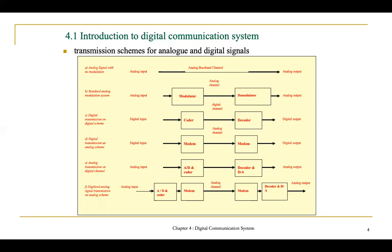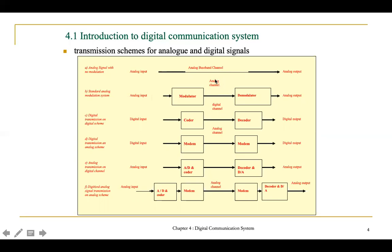This figure shows the transmission schemes for analog and digital signals. The first scheme is an analog signal with no modulation — you have analog input and analog output, transferring information directly without a modulator or demodulator. The second is a standard analog modulation system, which is what you learned in chapters 2 and 3 — analog input, analog output, transmitted through an analog channel with a modulator and demodulator.